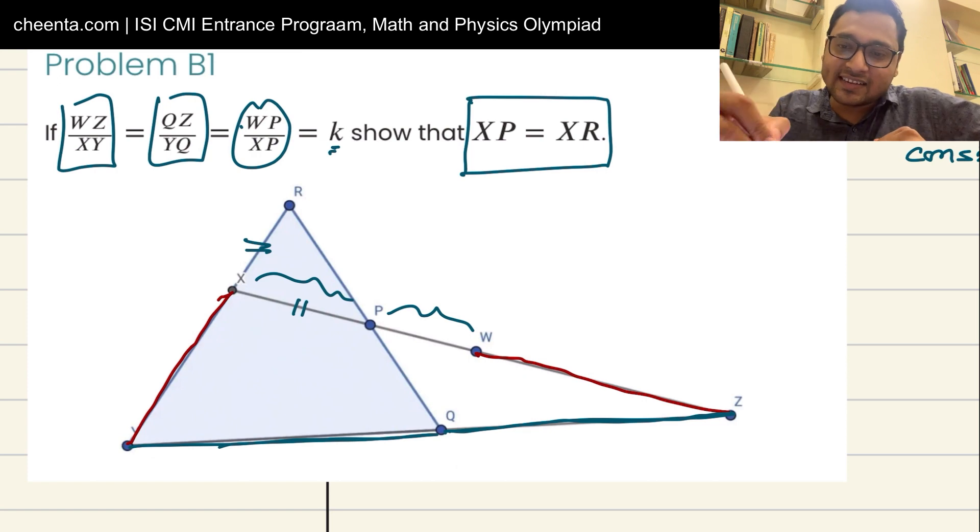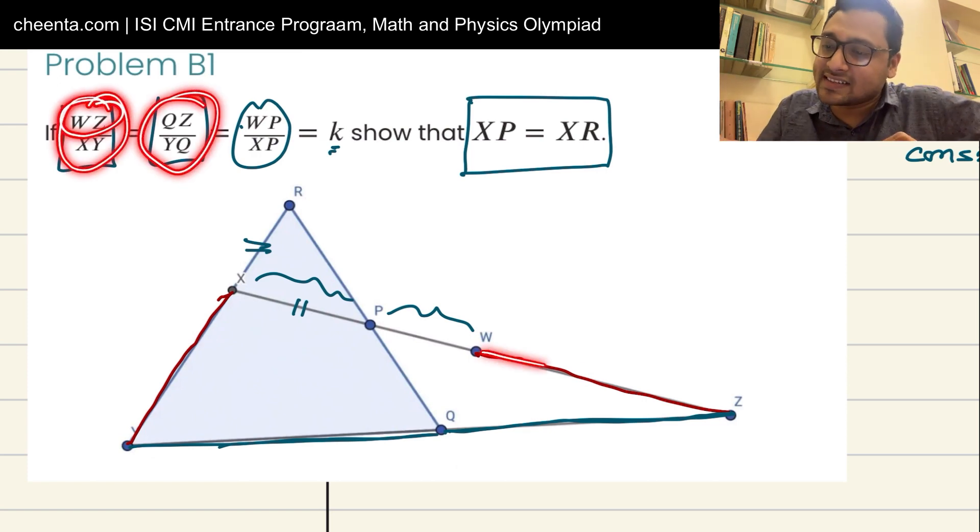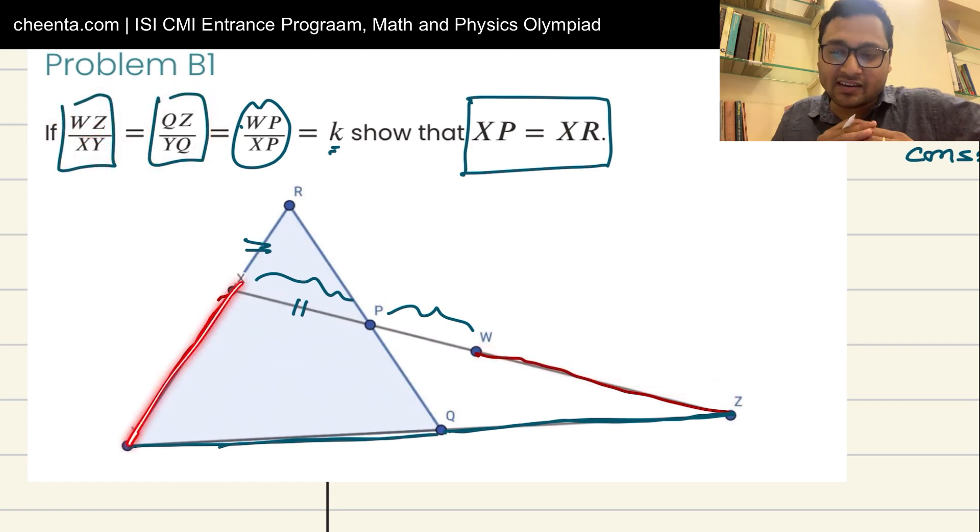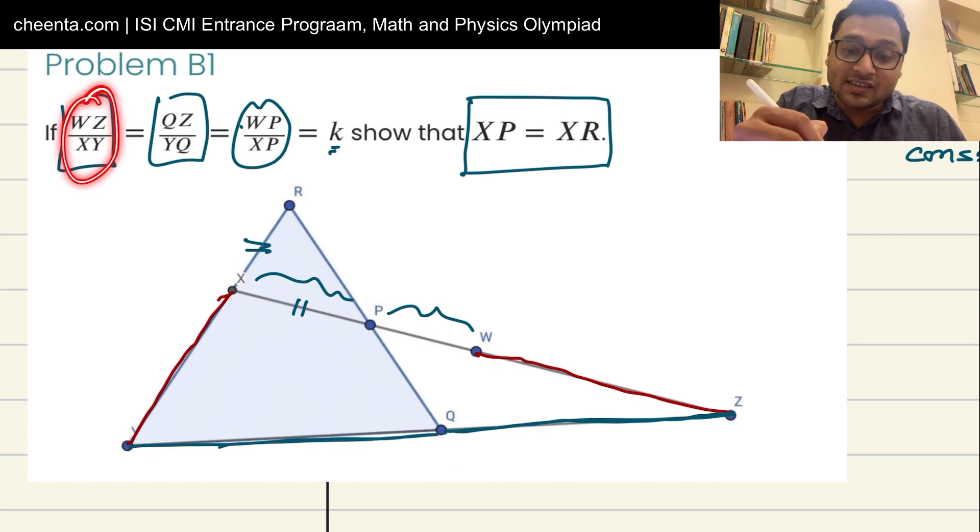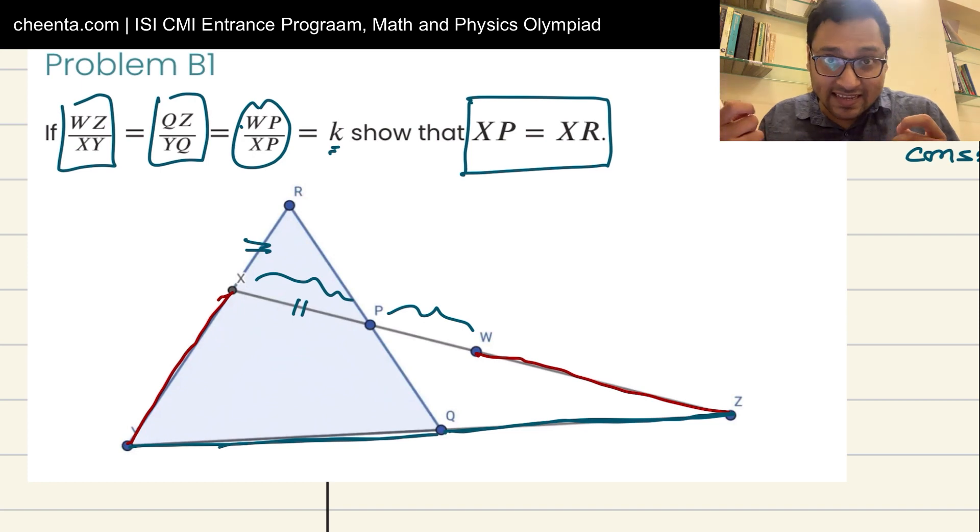So what I will do is, when I saw that these pieces like WZ is here, XY is here, I immediately know that I have to use some sort of construction. This is from experience. I have to use some sort of construction and maybe I have to use a combination of these ratios. So that's exactly what I tried.